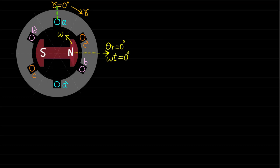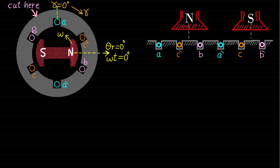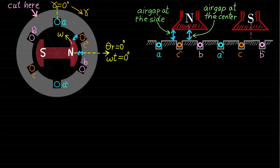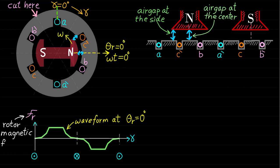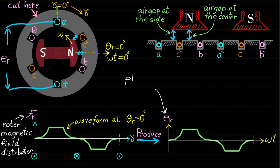Assume we have a two-pole, three-phase synchronous machine with salient pole rotor and concentrated windings. This figure shows the same machine if we flatten it. As we can see, the air gap under the center of the pole is equal to the air gap at the sides of the pole. As mentioned before, this type of rotor design with the same air gap or reluctance under the pole faces will produce a rotor magnetic field distribution close to a trapezoidal waveform when excited. Therefore, the induced back EMF voltage ER in the concentrated coil will be trapezoidal as well.